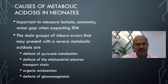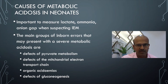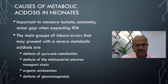Organic acidemias are part of the newborn screen and usually present by day 3 or day 4 with significant acidosis and high ammonia. Maple syrup urine disease can also present with acidosis. There are also defects of gluconeogenesis and multiple other factors. If you suspect an inborn error of metabolism, keep the baby NPO on IV fluids and consult a metabolic consultant.